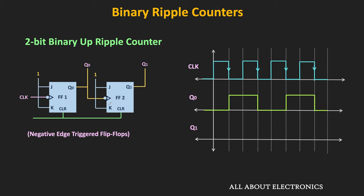As you can see from the circuit diagram, Q0 is applied to the clock input of the next flip-flop. That means Q1 will toggle at every falling edge of Q0. Up to the first falling edge of Q0, Q1 will remain 0. At the first falling edge it will become 1, and remain in that state until the next falling edge, at which point Q1 will toggle and become 0.